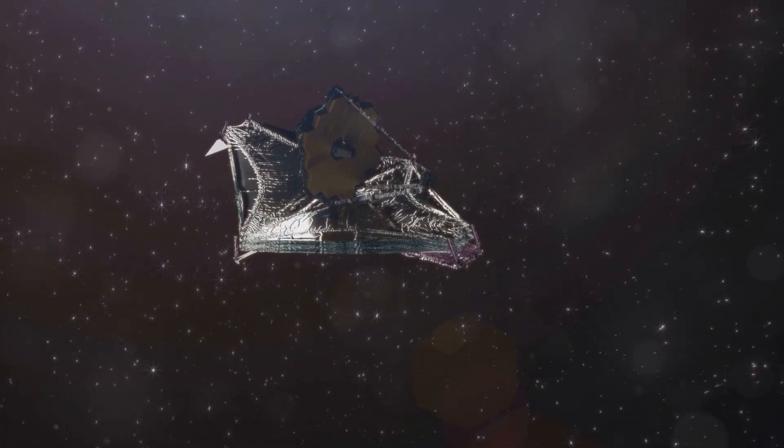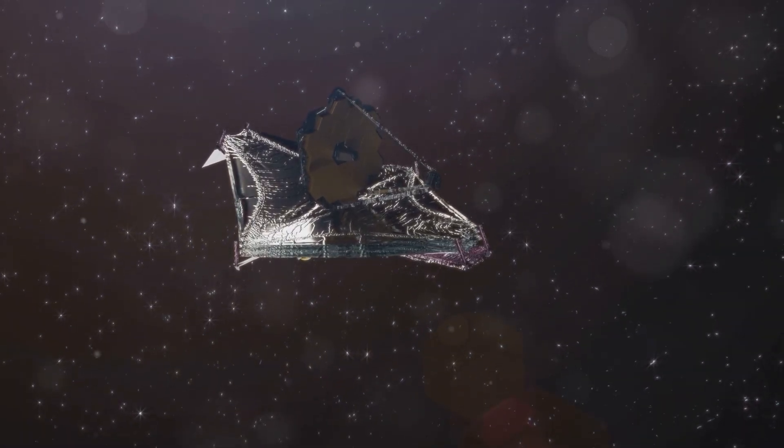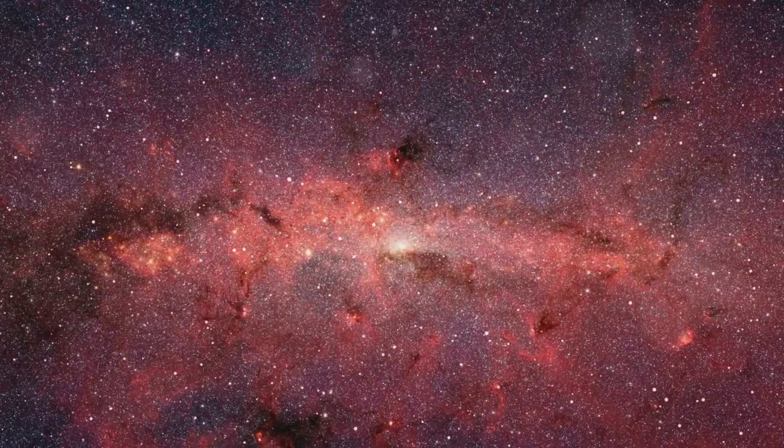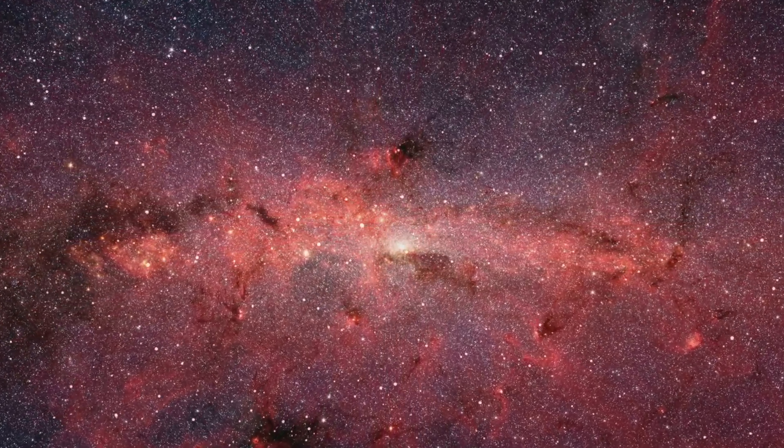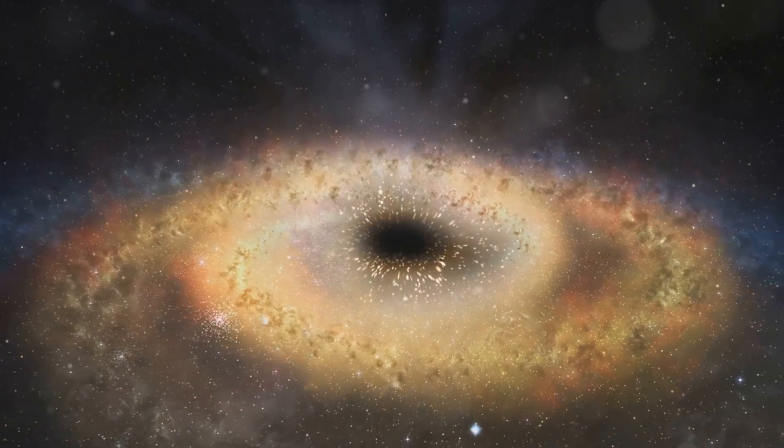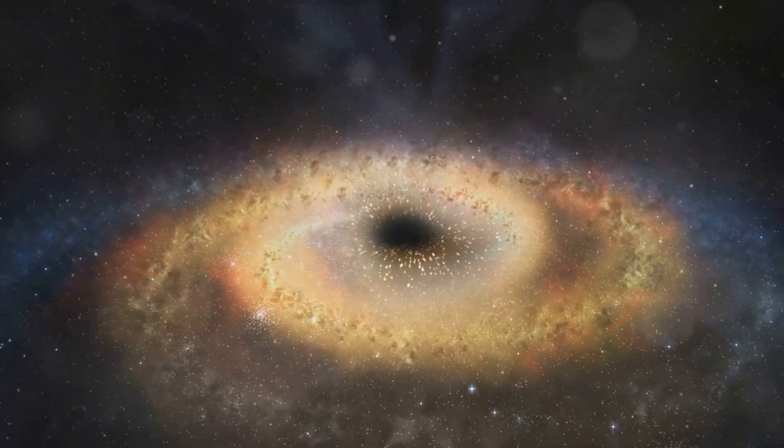JWST's ability to see through cosmic dust has allowed us to make some amazing discoveries. For example, it has allowed us to study the formation of stars and planets in unprecedented detail. It has also allowed us to observe the supermassive black holes that lurk at the centers of galaxies.